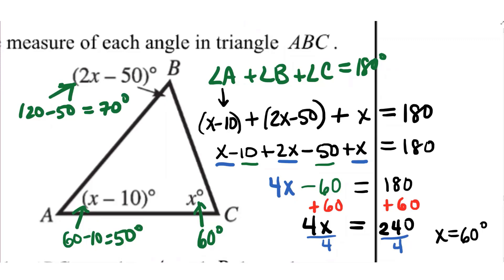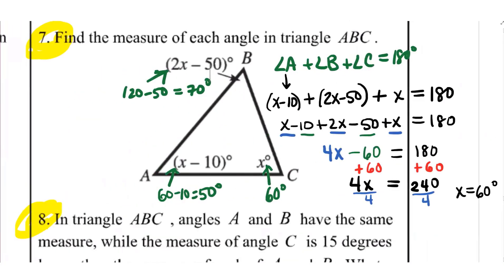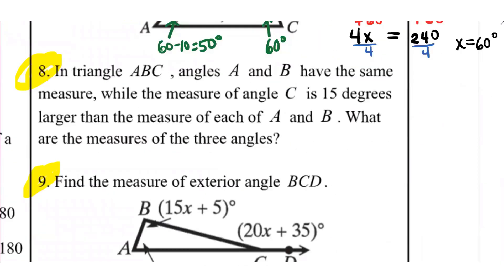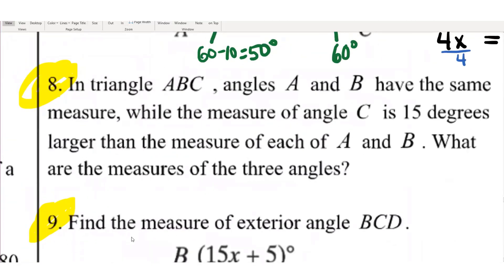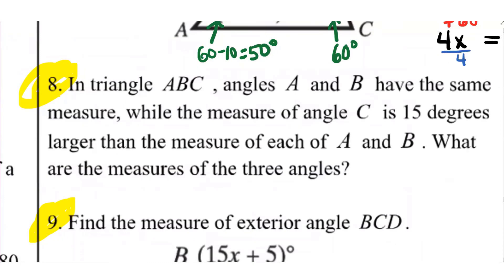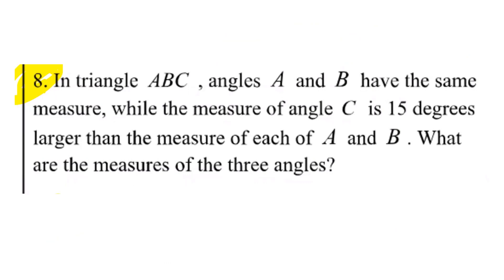How are we feeling about this whole having-to-do-a-little-algebra thing? A step up in difficulty level is when instead of giving you the diagram, they describe it in words. For example, here it says: in triangle ABC, angles A and B have the same measure, while the measure of angle C is 15 degrees larger than the measure of each of A and B. What are the measures of the three angles?